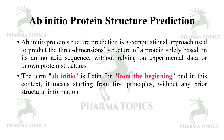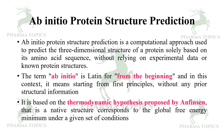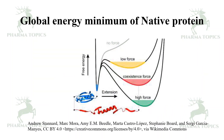It is based on the thermodynamic hypothesis proposed by Anfinsen: the native structure corresponds to the global free energy minimum under a given set of conditions. At the global energy minimum, the protein will fold and retain its properties. At low energy levels, the tertiary structure is obtained; when a high force is applied, it unfolds — that is the basic concept behind the ab initio method.